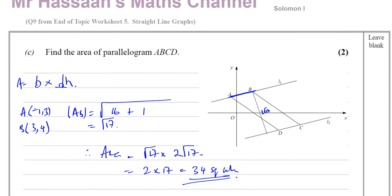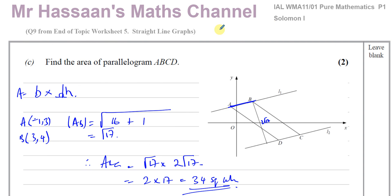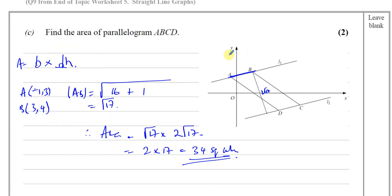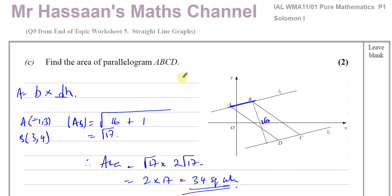That's the answer to part C and to this question — number 9 from the end of topic worksheet number 5, and question 10 from the Solomon I paper from the old C1 collection. I hope that was clear and you understood well. Other questions from this worksheet and from this Solomon I paper can be found in the playlist. You can also subscribe to my channel by clicking the link. Thank you for watching and see you soon.